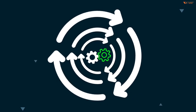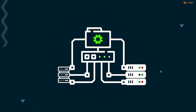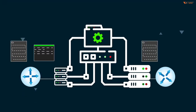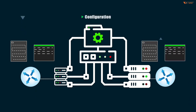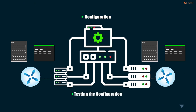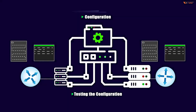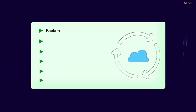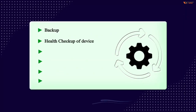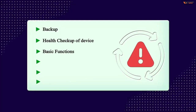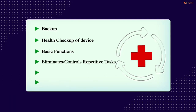When we go to network automation, things will happen automatically. Configuration will be automated, we will also test the configuration, and deploy everything automatically. Everyday tasks like backup, checking the health of a device, and basic functions will all be done automatically.